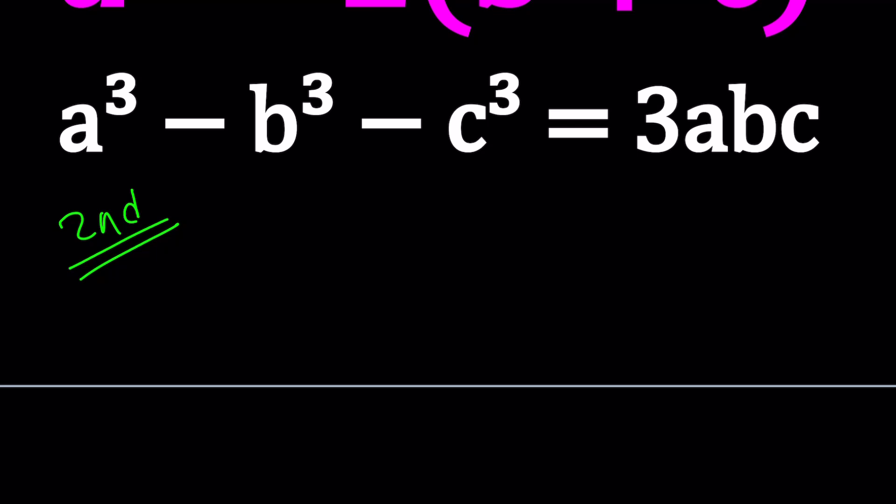So I'm going to start with the second equation, even though in the original problem statement I think this is the first. Anyways, I'll start with the cubics. So a cubed minus b cubed minus c cubed is equal to 3abc.